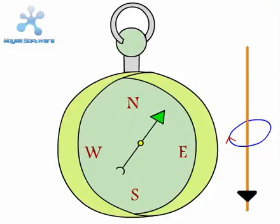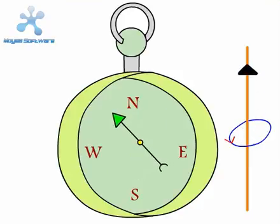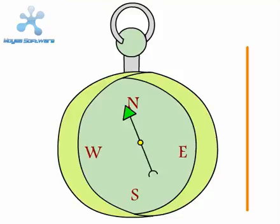He concluded that the current produced a magnetic field around the wire. When the current is switched off, the compass points back to magnetic north.